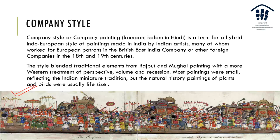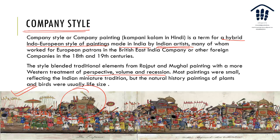Here is one of the most famous paintings of Bahadur Shah Zafar. The company style, or Company Kalam in Hindi, is a term for the hybrid Indo-European style of painting made by Indian artists who worked for European patrons of the British East India Company in the 18th and 19th centuries. It was a blend of Rajput and Mughal paintings with the more Western treatment of volume, perspective, and recession. Most paintings followed the Indian miniature tradition, but natural history paintings of plants and birds were usually lifelike with no exaggerations.